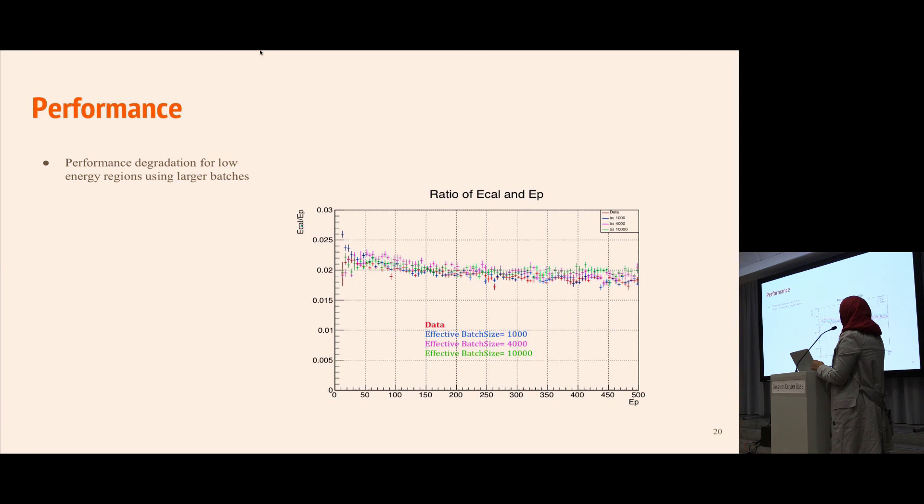Looking at performance, there is some degradation in low energy regions. This plot shows the same sampling fraction using different effective batch sizes. The greater the number of nodes, the more the effective batch size.